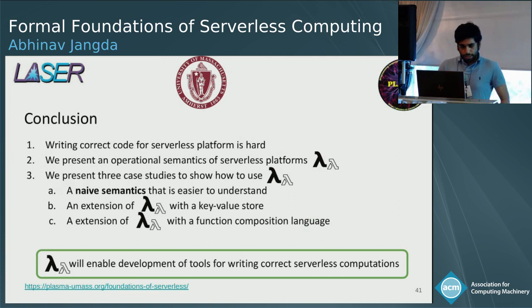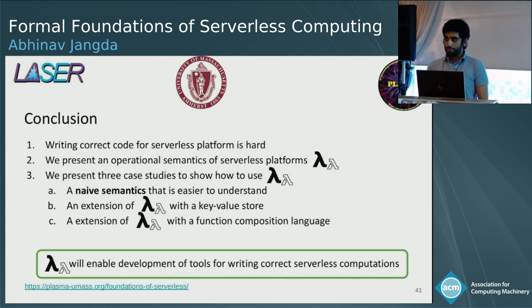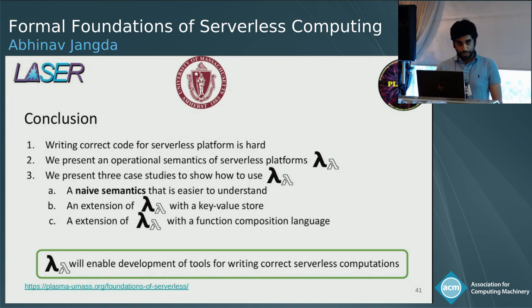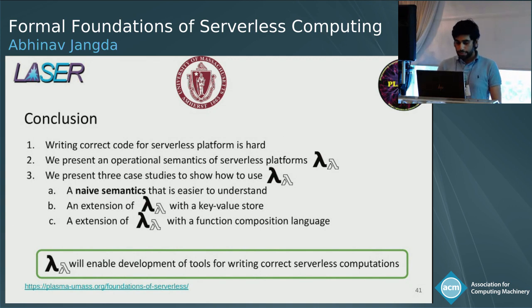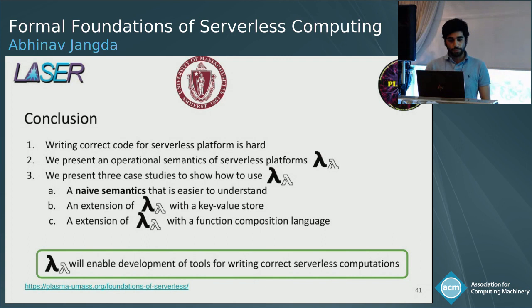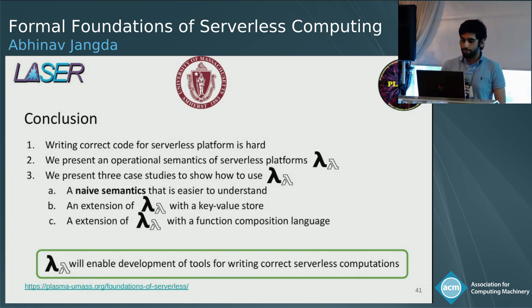In conclusion, writing code for serverless platforms is hard. We present Lambda-Lambda, an operational semantics for serverless platforms, and three case studies on how to use it. The first is naive semantics — easier semantics compared to Lambda-Lambda — showing precisely when they can be used. The second extends Lambda-Lambda with a key-value store to show it can compose models of external services. The third extends Lambda-Lambda with a function composition language for efficient composition of serverless functions. We believe Lambda-Lambda will enable development of tools for writing correct code for serverless computations.